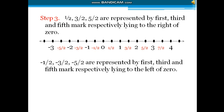Just like that, you have to represent on the left side also. On the left side, we have minus 1 by 2, then minus 1, then minus 3 by 2, then minus 2, then minus 5 by 2, then minus 3. This is the representation of rational numbers on the number line. Minus 1 by 2, minus 3 by 2, and minus 5 by 2 are represented by the 1st, 3rd, and 5th marks respectively lying to the left of 0.